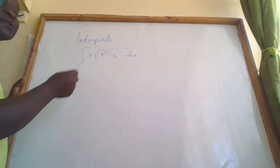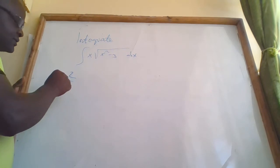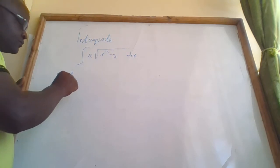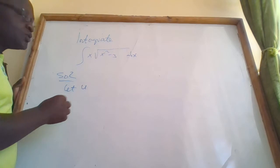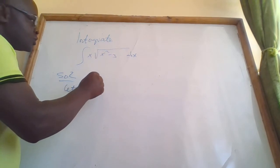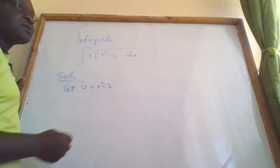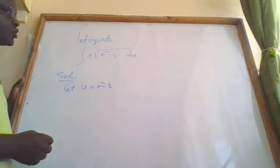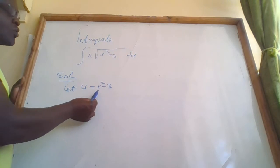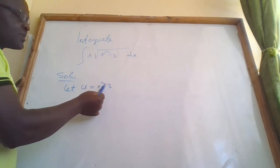For the solution, we let u equals x squared minus 3.